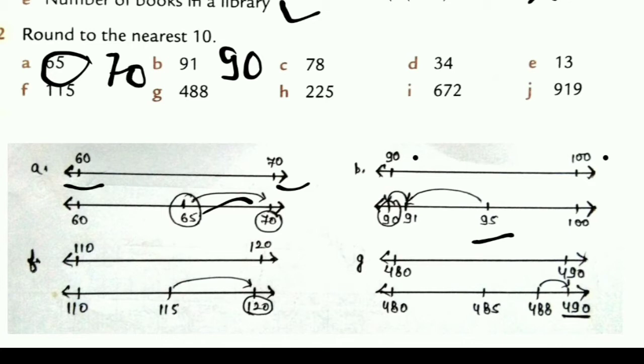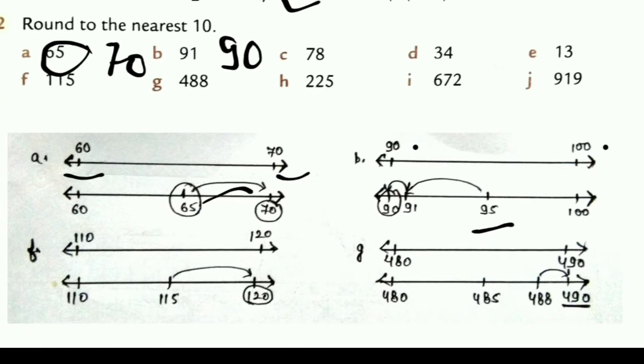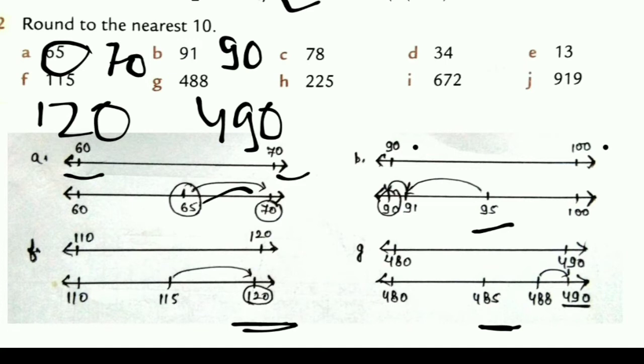Next, F, that is 115. This is mid value. So this will come under 110 and 120. When the question is mid value, it means it will go to next number. Next, G is 488. The mid value is 485. It is more than that, so it will go to next number, that is 490. Got it?